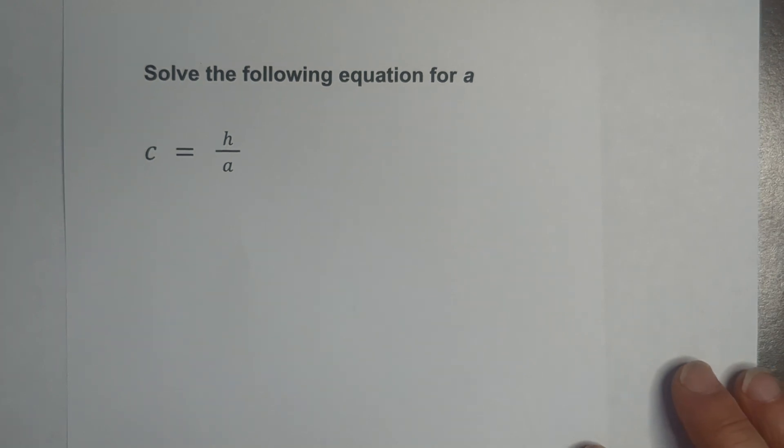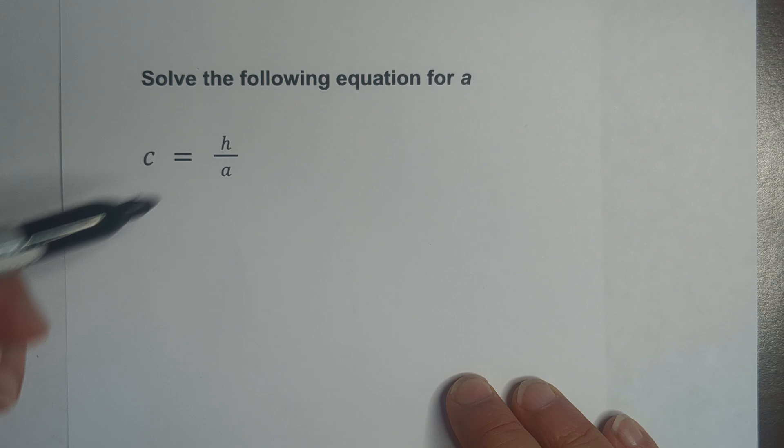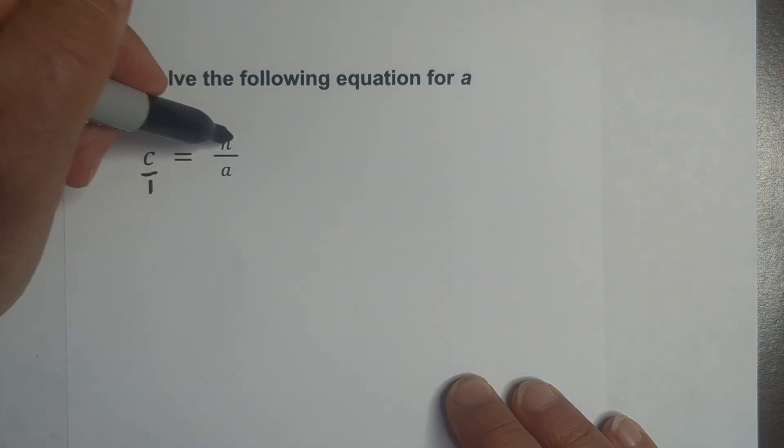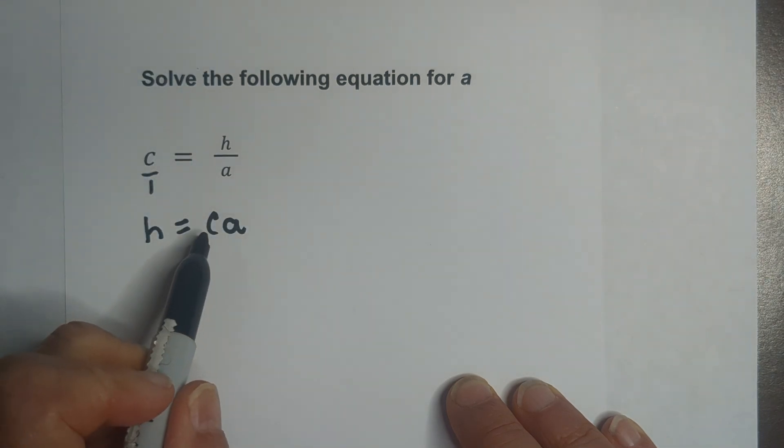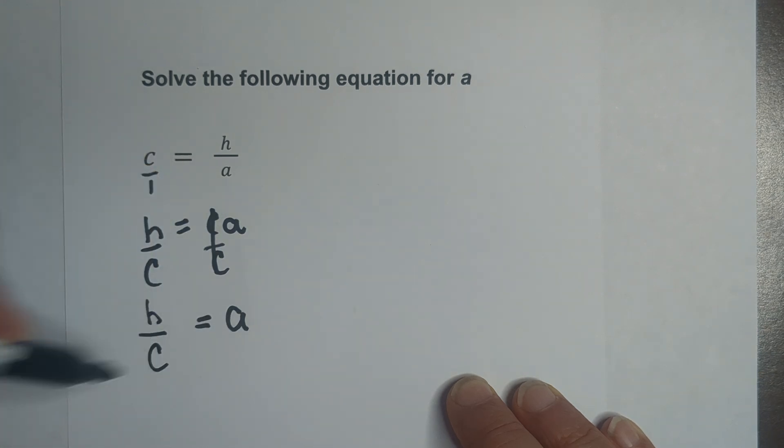In this example, we are solving for A, and A is on the bottom of the fraction. So the first thing we need to do is move A off the bottom of the fraction. We're going to cross-multiply. C is over 1, so we're going to cross-multiply H equals C times A. Now we need to get A by itself. C is being multiplied by A, so we can complete an inverse operation. We'll divide both sides by C. These cancel, and we're left with A equals H over C.